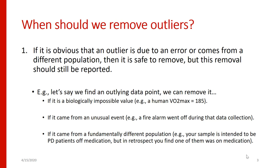In the first situation, if it's obvious that an outlier is due to some kind of error or comes from a totally different population, then it's safe to remove. But this removal should still be reported in your text. Across all these examples, we want transparent reporting, so any dropping of data needs to be reported when you write this up for publication. An example would be if we have some sort of biologically impossible value — if we had a human VO2 max of 185, we know that's not physiologically possible. Therefore, we think there was some sort of data entry or recording error, and that data point should be excluded.